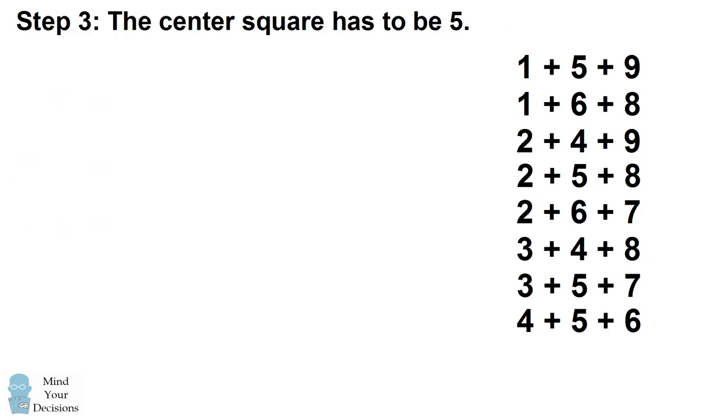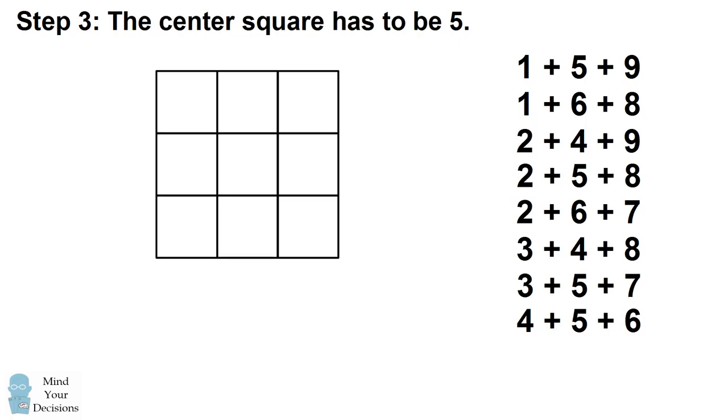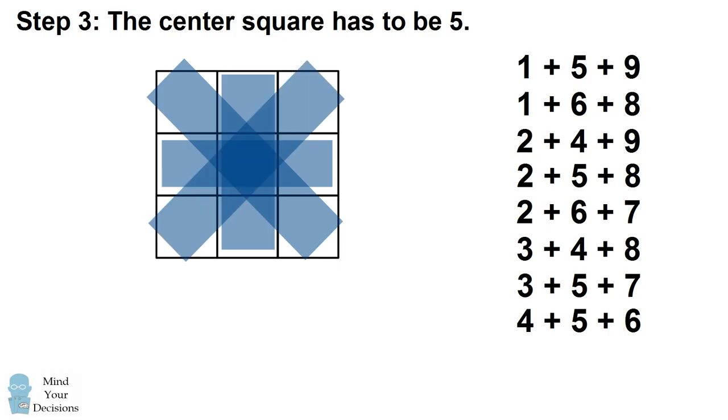For example, this will be able to tell us the center square has to be 5. The center square is involved in the middle row sum, it's involved in the middle column sum, and it's also involved in the sum of each of the two diagonals. So the center square is involved in 4 different sums of numbers. If we look at our sums, only the number 5 is involved in 4 different combinations. All of the other ones are involved in either 2 or 3 of the combinations. So that means the center square would have to be 5.